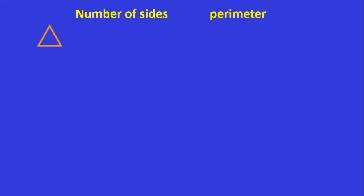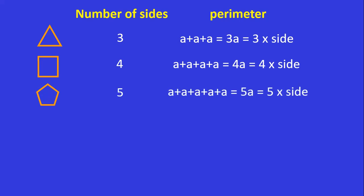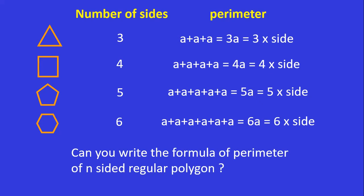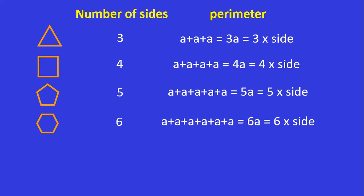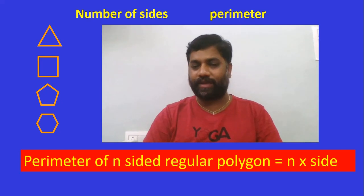Now let us generalize the perimeter formula by observing all regular polygons. For an equilateral triangle with 3 sides, perimeter is 3 into side. For a square with 4 sides, perimeter is 4 into side. For a pentagon with 5 sides, perimeter is 5 into side. For a hexagon with 6 sides, perimeter is 6 into side. The formula for an n-sided regular polygon is: perimeter equals n into the length of the side. If you know the length of the side and number of sides, you can find the perimeter, and vice versa.